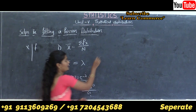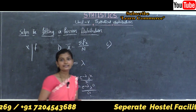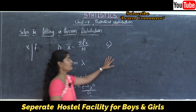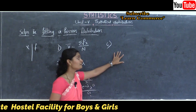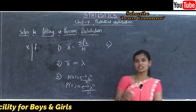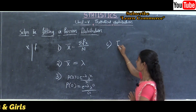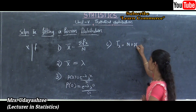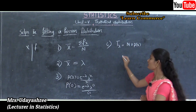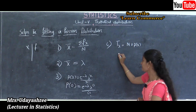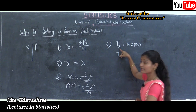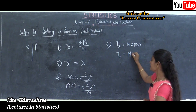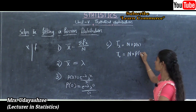Step 4 is to find the first term of the theoretical frequency distribution. To calculate the first term of the theoretical frequency distribution, we use the formula T(X) = N × P(X). For the first term, we put X = 0, so T(0) = N × P(0).